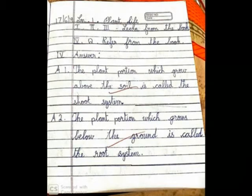Science lesson one: plant life. Question one: What is the shoot system? The entire plant portion which grows above the soil is called the shoot system.